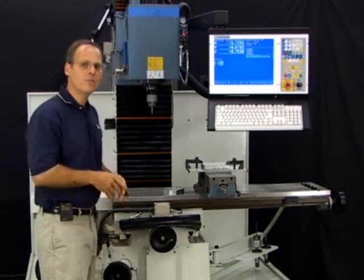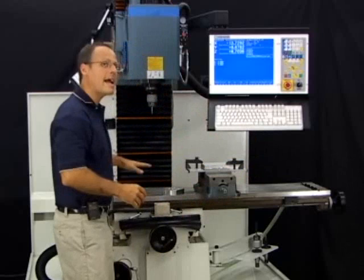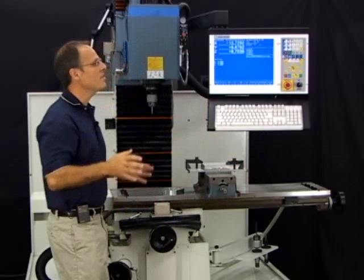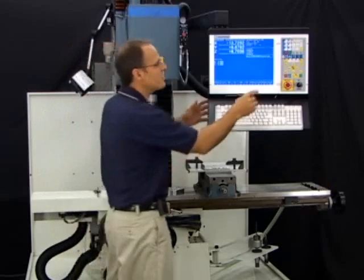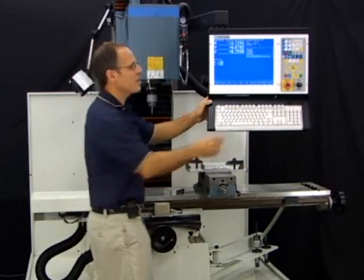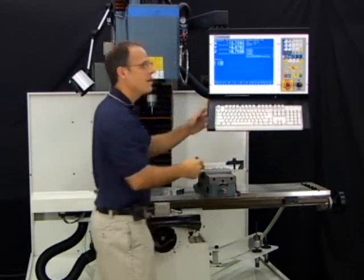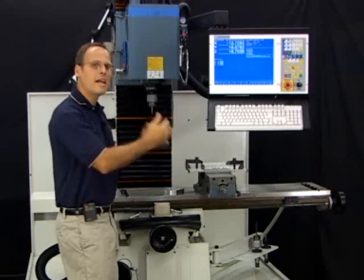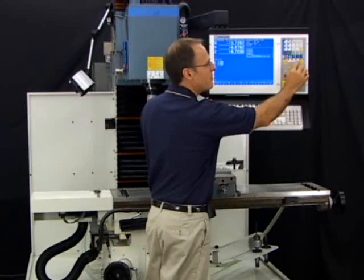Let me show you how to jog the machine around. I'm going to use the operator's panel here to move an axis. When the control is done homing out, by default it starts in incremental jog mode. That means whenever I hit the jog button, in this case the X positive jog button, that X axis is only going to increment by whatever amount is currently selected on the jog increment buttons.